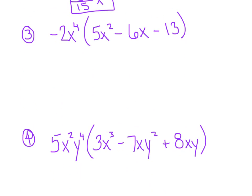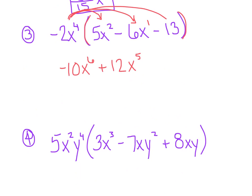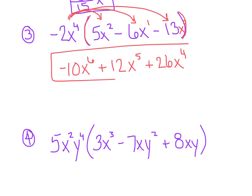Inside this group of parentheses is a trinomial, so we're going to use the distributive property. First term: multiply the numerical coefficients to get negative 10, and add the powers to make x to the 6th. Distribute a second time: two negatives give positive 12, and the invisible 1 gives x to the 5th. Distribute a third time: negative 2 times negative 13 is positive 26, and there's an invisible x to the 0, so adding the powers gives x to the 4th. That's the final product.